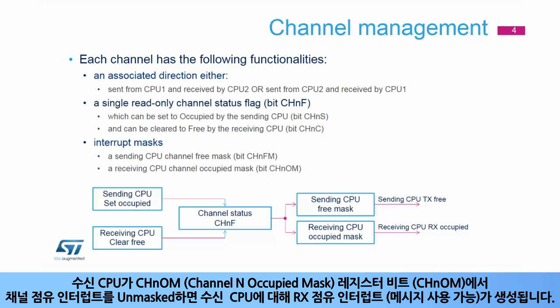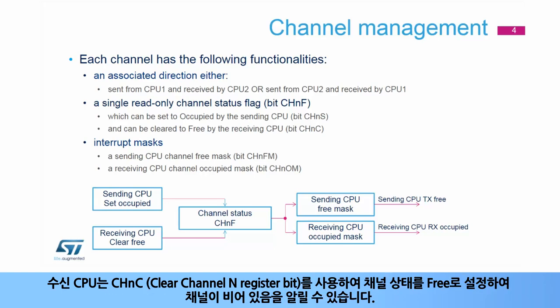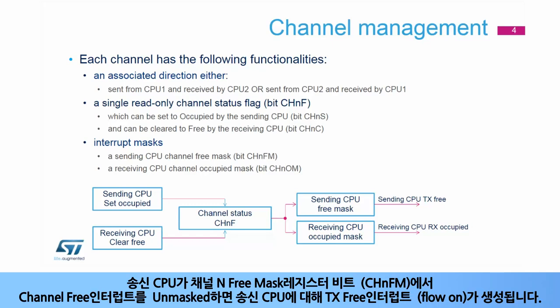If the receiving CPU has unmasked its channel-occupied interrupt in its channel N occupied mask register bit, or CHNOM, an RX occupied interrupt, or message available, is generated for the receiving CPU. The receiving CPU can signal a channel to be free by setting the channel status to free using its clear channel N register bit, or CHNC. If the sending CPU has unmasked its channel-free interrupt in its channel N free mask register bit, or CHNFM, a TX-free interrupt, or flow-on, is generated for the sending CPU.